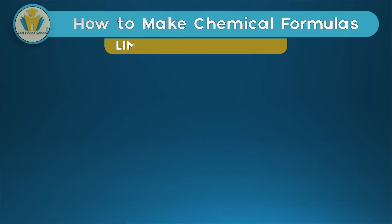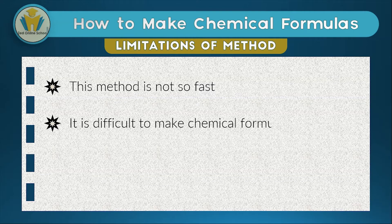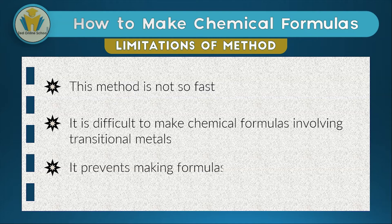The limitations of this method are: it's not fast, it's difficult to make chemical formulas involving transitional metals using this method, and it proves very difficult to make formulas involving radicals. This method is usually shown to students just to give them an understanding of how chemical formulas come about, after which they'll be shown the second way.